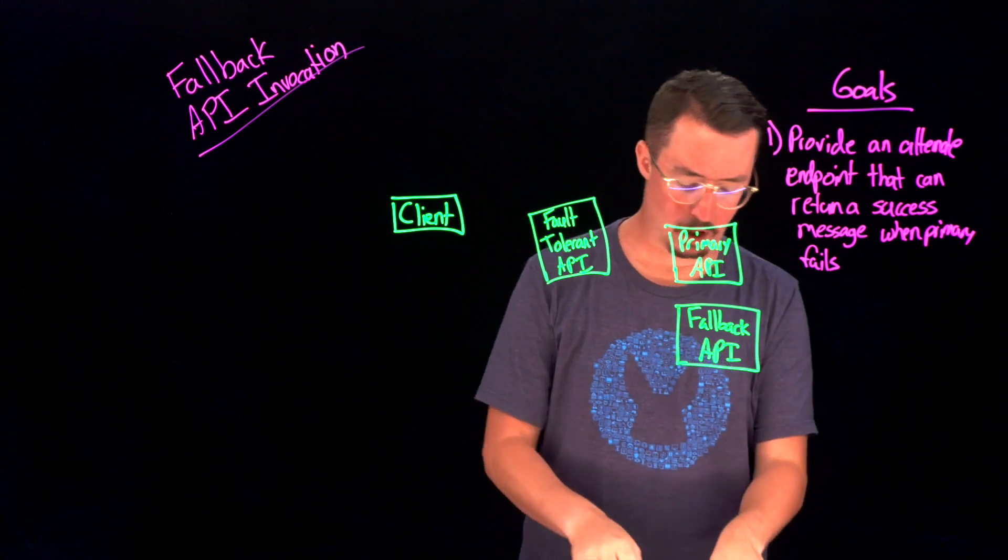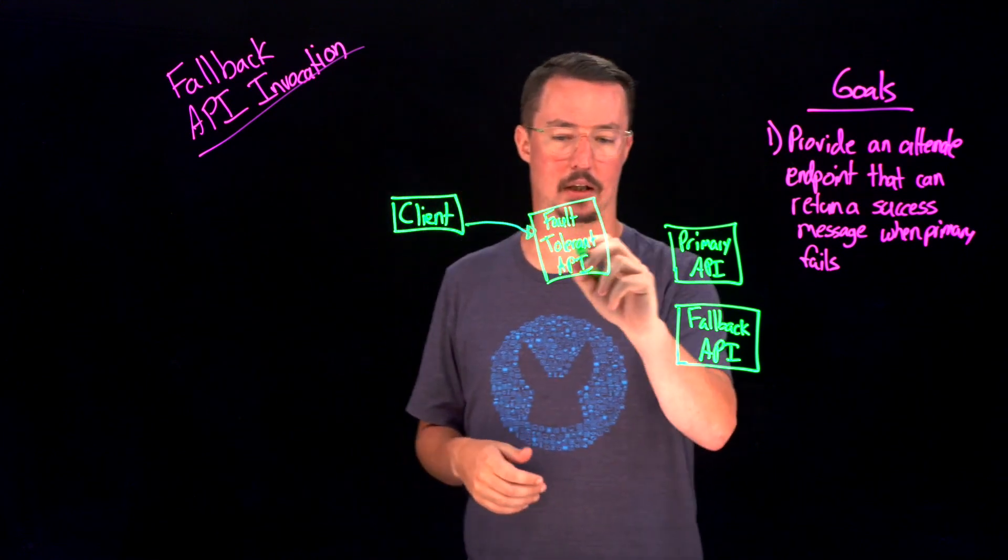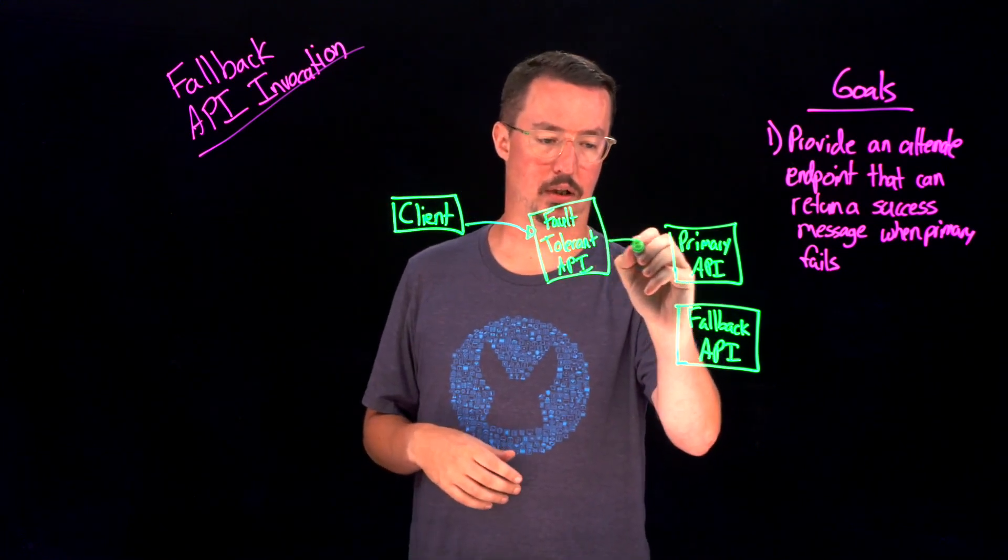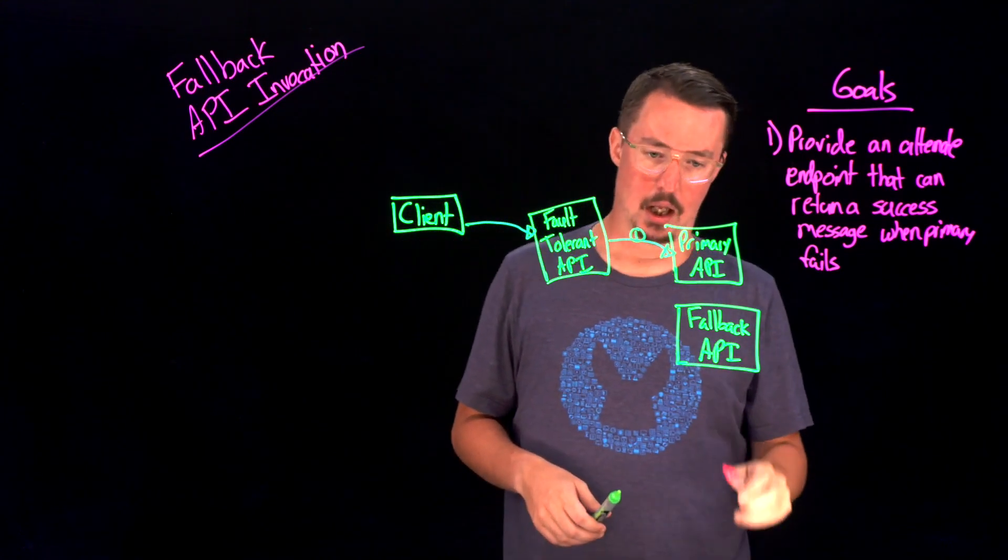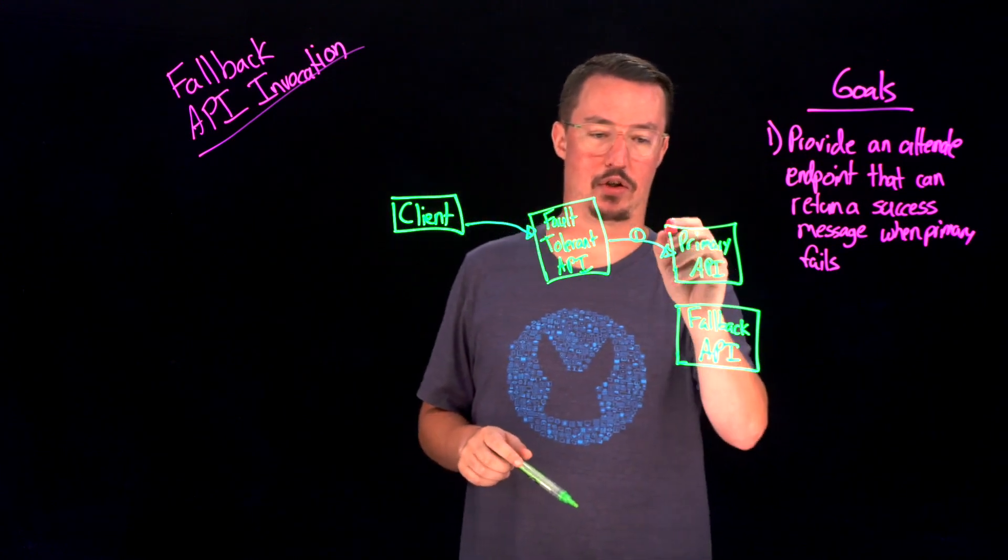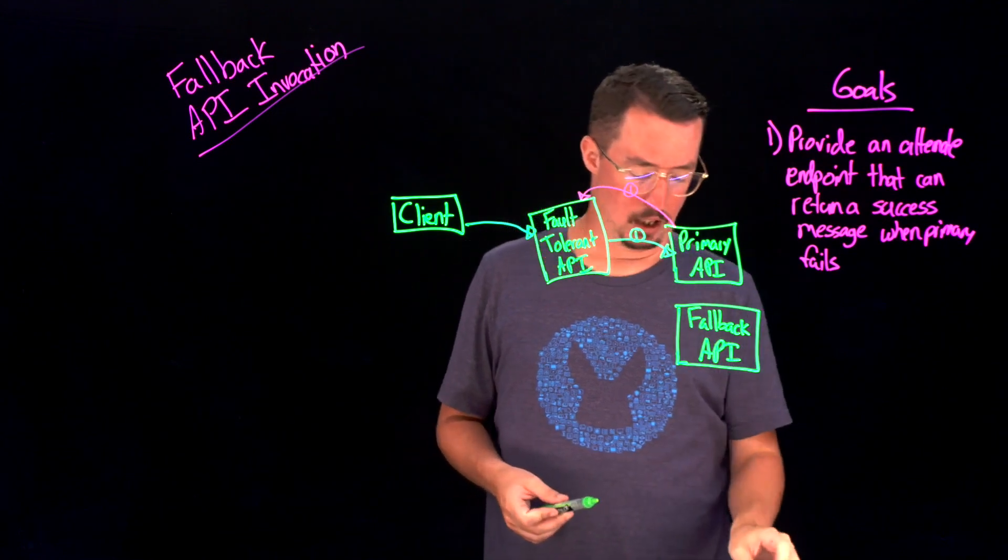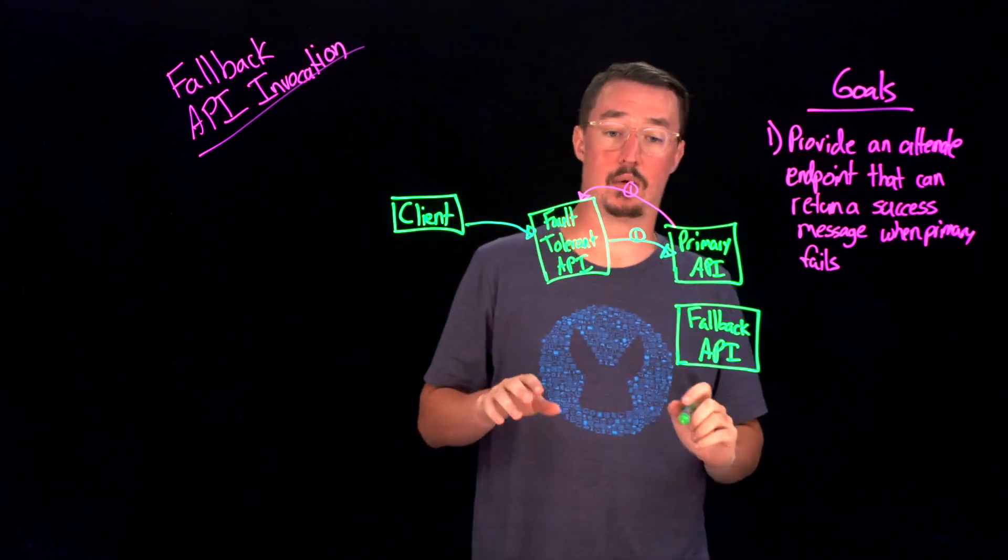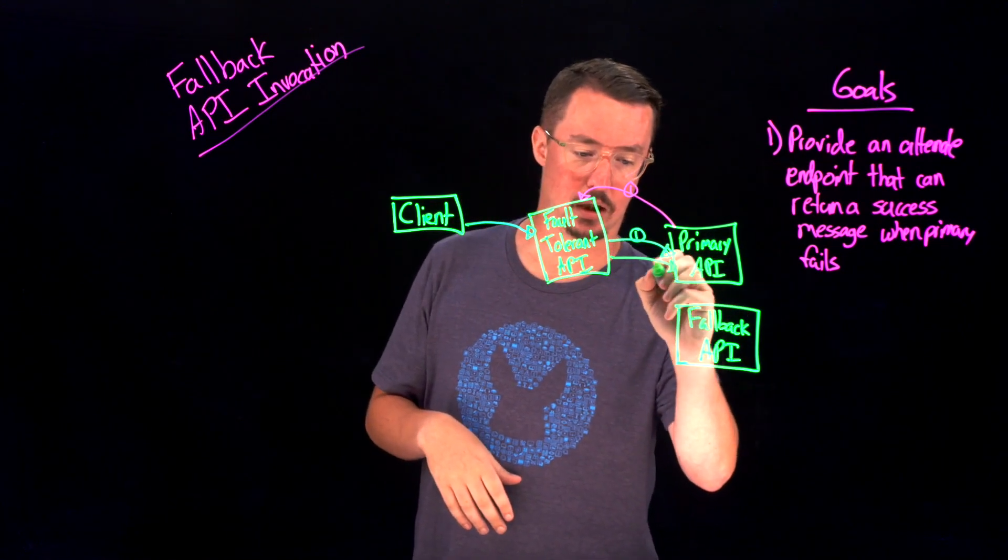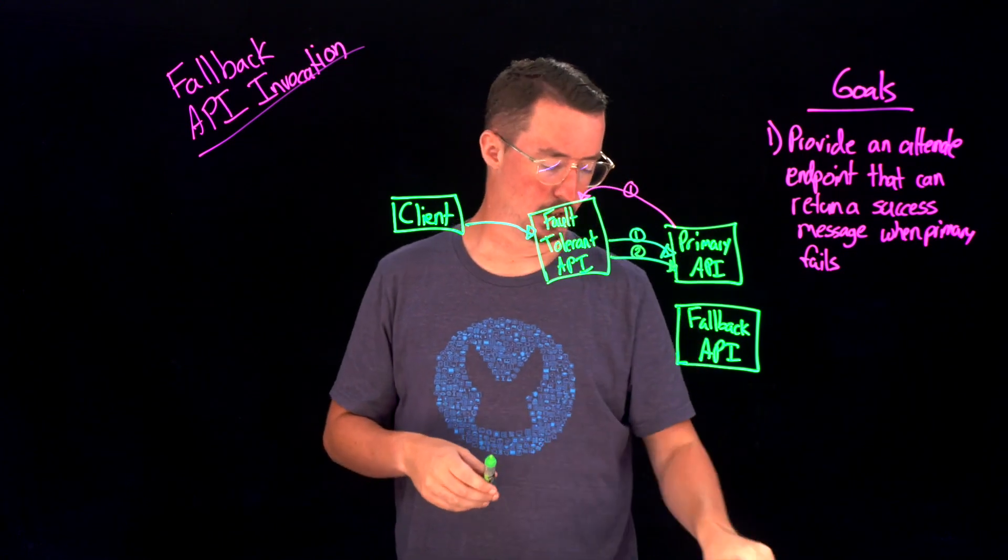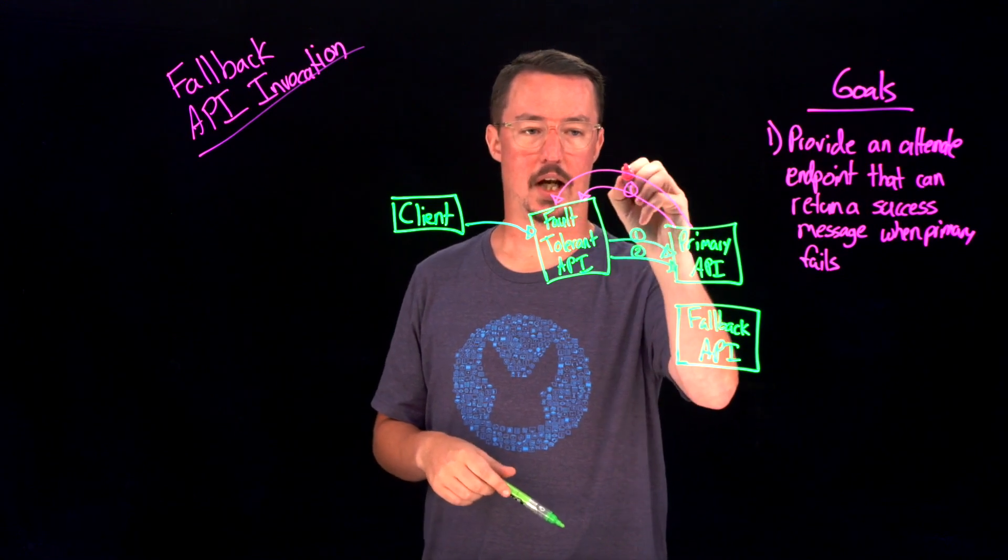Okay, so we start off with our client calling our API, which is going to pass through the fault-tolerant API. The fault-tolerant API is going to pass this over to the primary API. So this is the first time we're going to call this. That primary API is going to actually return back a failure message. And this fault-tolerant API is going to say, let's retry this one more time. We've got a retry process. We're going to retry it one more time. So we're going to call over here a second time. And lo and behold, we're still going to receive a failure message back.